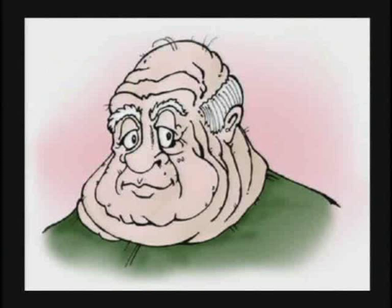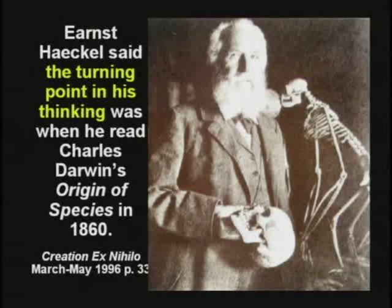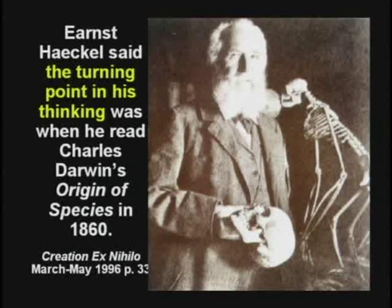Those are not gill slits. Ernst Haeckel said the turning point in his thinking was when he read Darwin's book in 1860. Darwin's book was printed in English in 1859, then in German in 1860. Haeckel was a German embryology professor. He read the book and said, wow, what a great theory — if only we had some evidence. Well, nine years later, they still had no evidence. So Haeckel decided to help out — he was going to make some evidence.